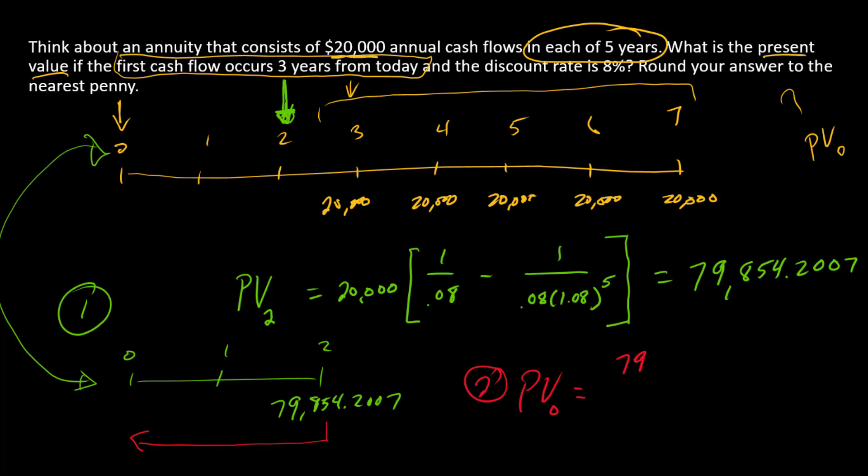We're taking it back two periods to time zero, and that's going to give us the present value as of today. So the answer to this problem is $68,462.1063. There is our present value at time zero.